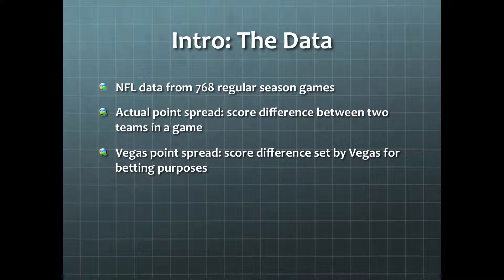Specifically, we're interested in point spreads, which are the score differences between two teams. This data includes the points scored by the teams in each game, from which we can calculate the actual point spread. It also includes spreads set by Vegas before the game, which is used for betting.